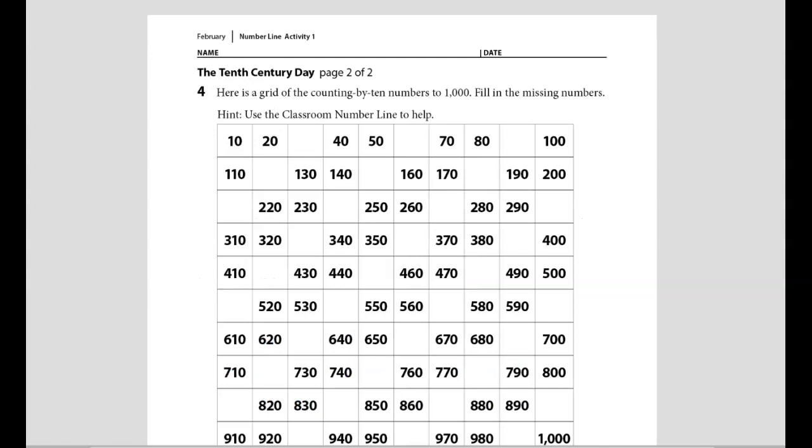Number four is showing you a grid of the counting by 10 numbers to 1,000. You are going to fill in the missing numbers. I want you to be thinking about our class number line that we've been counting on during the century days to help you. Think about our counting by 10. You will fill in every box that's empty. So if we start at the beginning right here, we're starting at the number 10. Counting by 10s. 10, 20, 30, 40, 50, 60, 70, 80, 90, 100. Keep filling in the boxes all the way to 1,000.